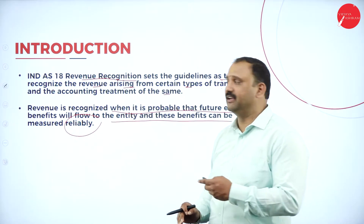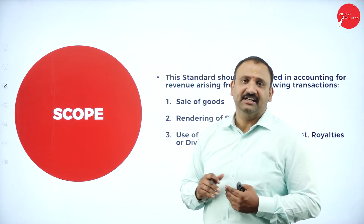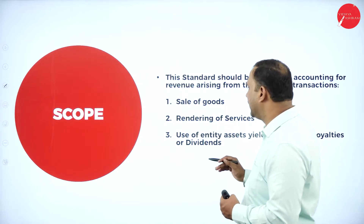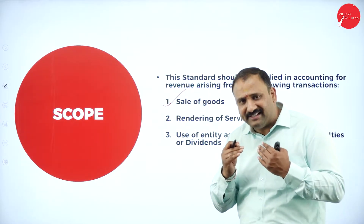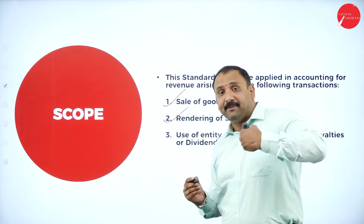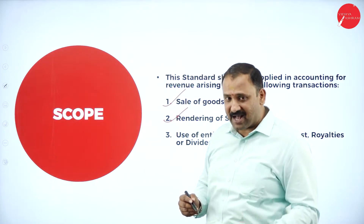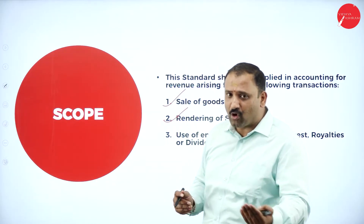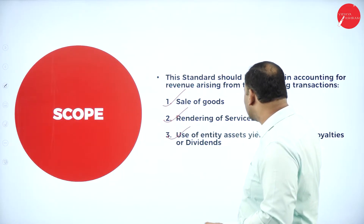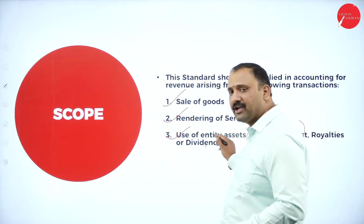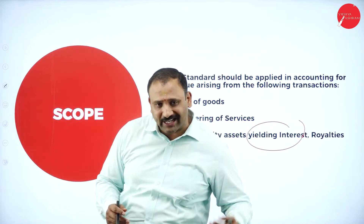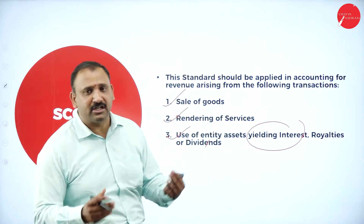The scope of the standard should be applied in accounting for revenue arising from the sale of goods — typically sales — that is the first part. The second is rendering of services: if I am a service-oriented company rather than a manufacturing company, I get revenue from all services rendered. Followed by use of entity assets yielding interest, royalties, and dividends — by using those assets, if I am going to get interest, dividends, or royalties, all of this will again become part of the revenue.